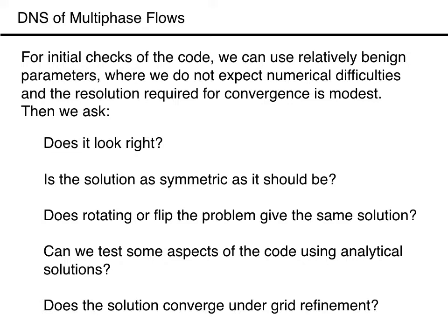For the first part, it is convenient to work with benign parameters, such as a small density ratio and modest values of viscosity and surface tension, where we are reasonably certain that we will not run into any numerical difficulties. If we have an analytical solution, then we can compare the results with it. In most cases, an analytic solution is only applicable for simple special situations, such as a spherical drop in Stokes flow that only tests part of the code. In many cases, we can use the method of manufactured solutions, and although it is a great way to check codes, it is a bit of an overkill here.